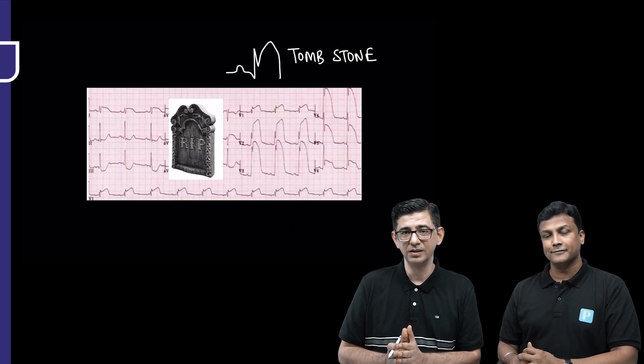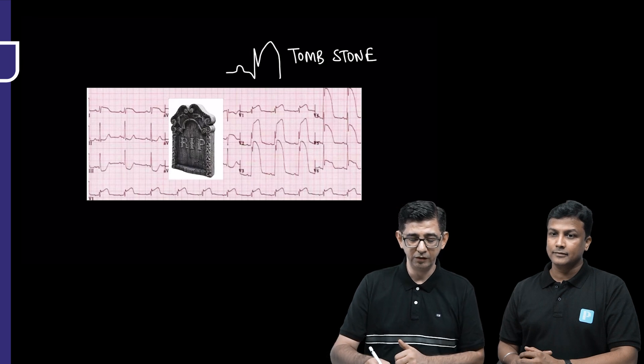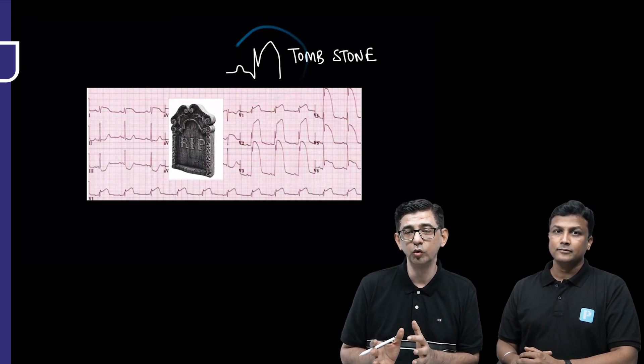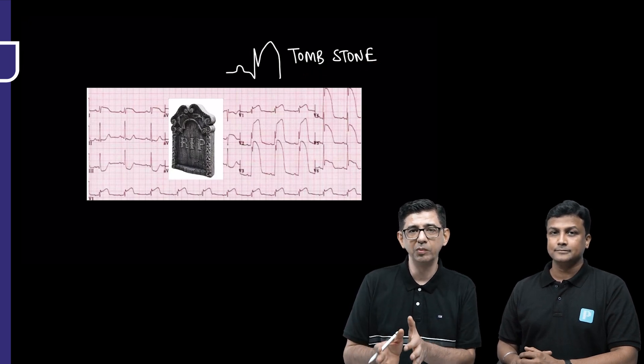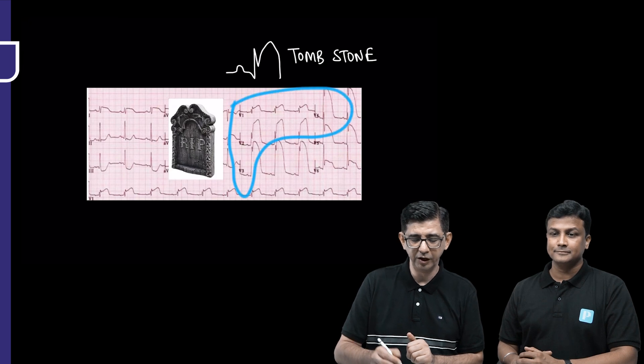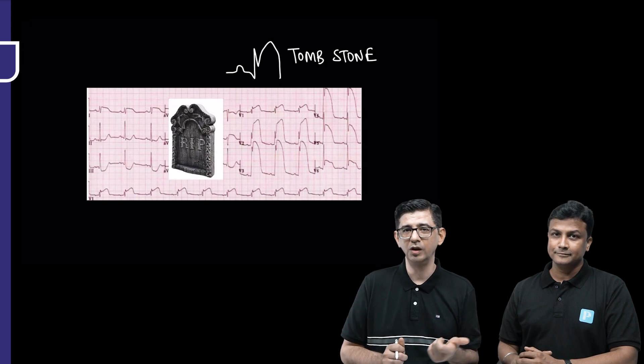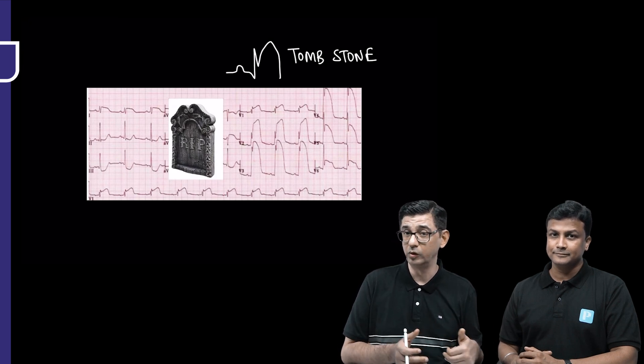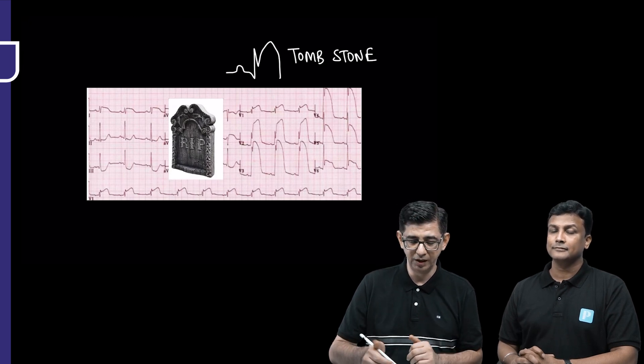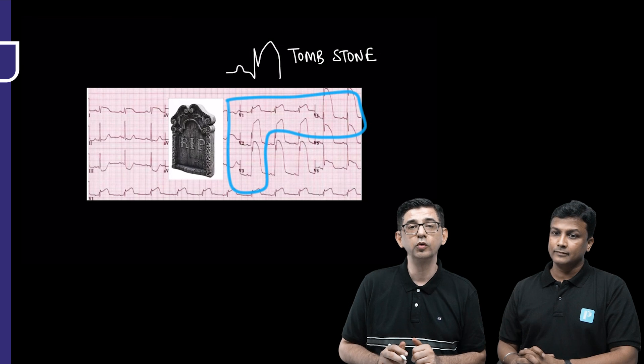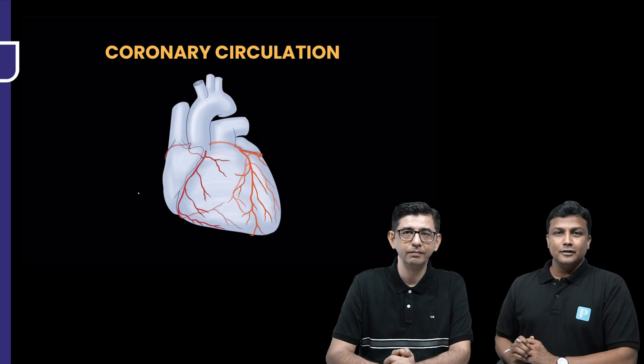Now, as far as the ECG findings are concerned, it's right in your face. I mean, just look at the huge ST segment elevation that is present in this case, which is also referred as a tombstone pattern. In fact, either we can call it tombstone or we can call it a party sign. And these findings would be present in lead number V1 to V4 for anterior wall myocardial infarction.